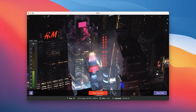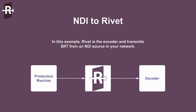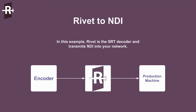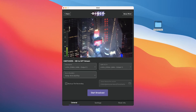Now let's show you the other direction. In this case, Rivet is going to be the SRT decoder and it's going to transmit NDI into our network. This encoder running in the cloud is going to send SRT to Rivet on my MacBook, and that's going to stream NDI out to our production machine.